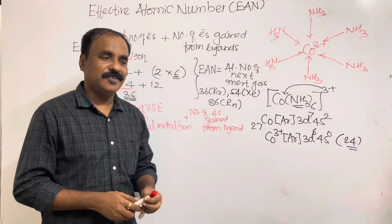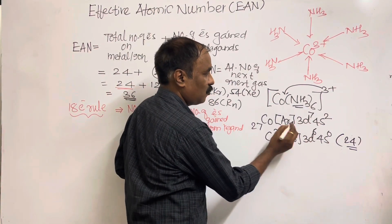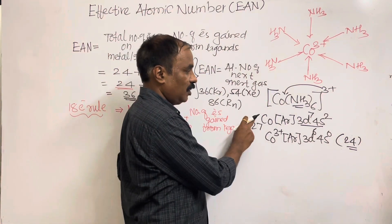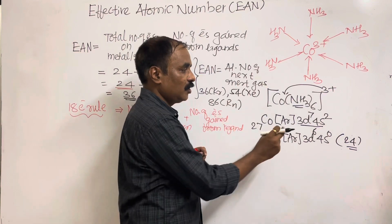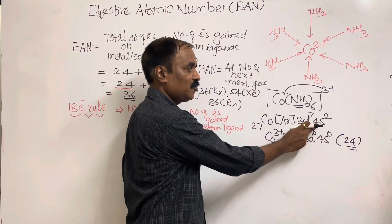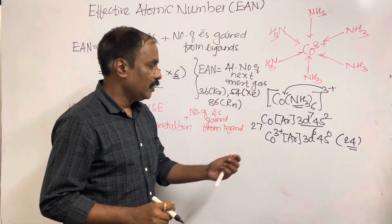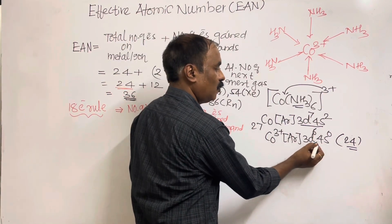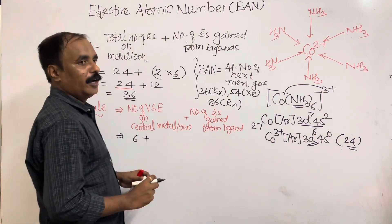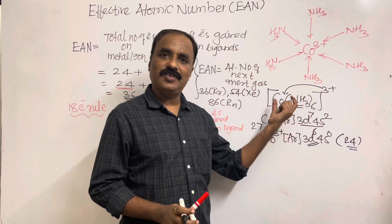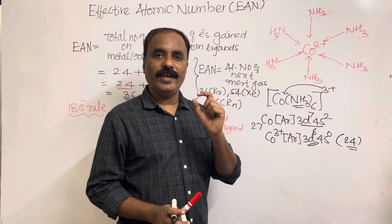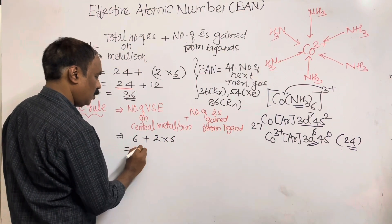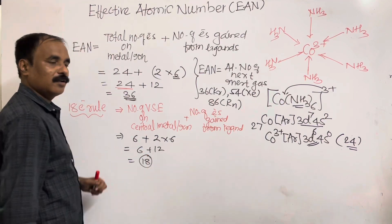Taking the same example, hexamminecobalt(III): neutral cobalt has 7 (3d) + 2 (4s) = 9 valence electrons. Since cobalt is Co³⁺, removal of 3 electrons (2 from 4s and 1 from 3d) gives 6 valence electrons. Plus electrons from ligands: 6 ammonia ligands × 2 electrons = 12. So 6 + 12 = 18, confirming this complex obeys the 18-electron rule.